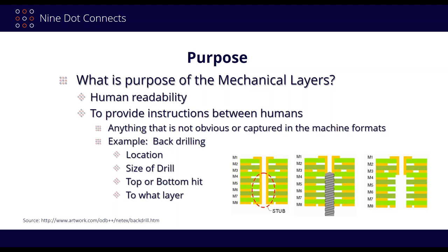We actually use mechanical layers for human readability — to pass information along from us, the designer, over to those folks who are doing the fabrication and assembly. There are some exceptions to that. We've done webinars in the past on design for manufacturing and on the documentation you need to provide. But in the end, you can divide your documentation into machine information and human information, and most of that human information comes from the mechanical layers. That was an interesting revelation.